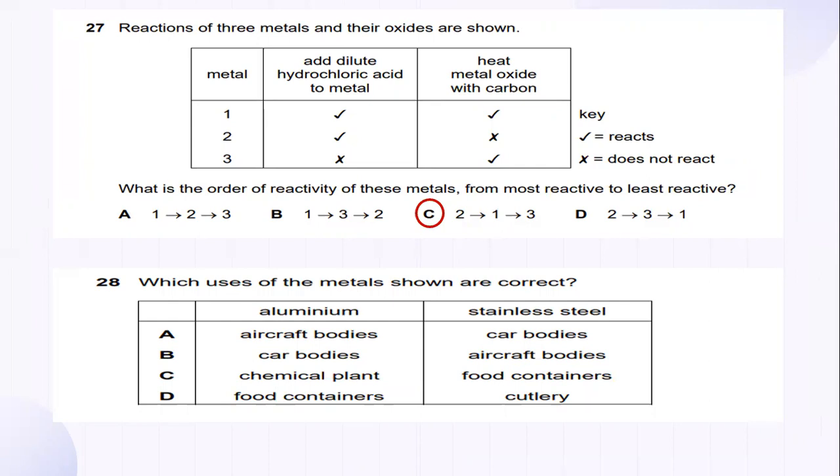Which uses of the metal shown are correct? So, aluminium is used as food containers and the stainless steel is used as cutlery. So, the answer for number 28 is D. You can refer to some uses of metal.